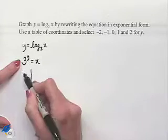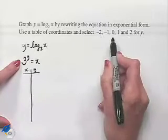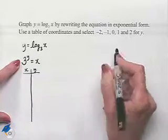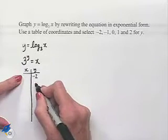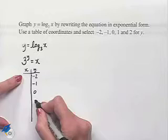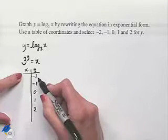In our table of coordinates, we're going to select values for y and find corresponding values for x. Our y values would be -2, -1, 0, 1, 2. Now we're going to substitute into our equation.